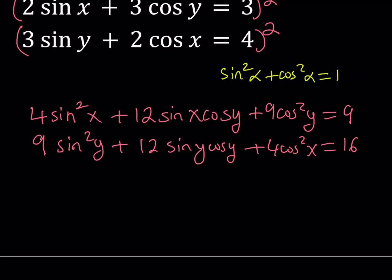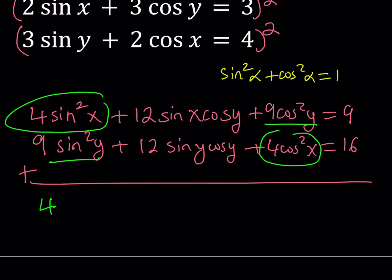Now, what I'd like to do is add these two equations, because notice that we have 4 sine squared here and 4 cosine squared here. This means 4 times the quantity sine squared x plus cosine squared x, which equals 1, so that should give us 4. We have 9 sine squared y and 9 cosine squared y, their sum is going to be 9 for the same reason. And then these two terms basically have the same coefficient, so I can just factor out a 12 and see what happens.